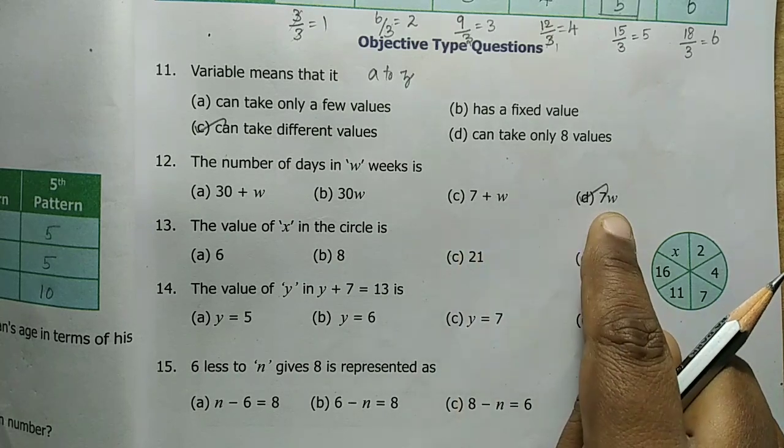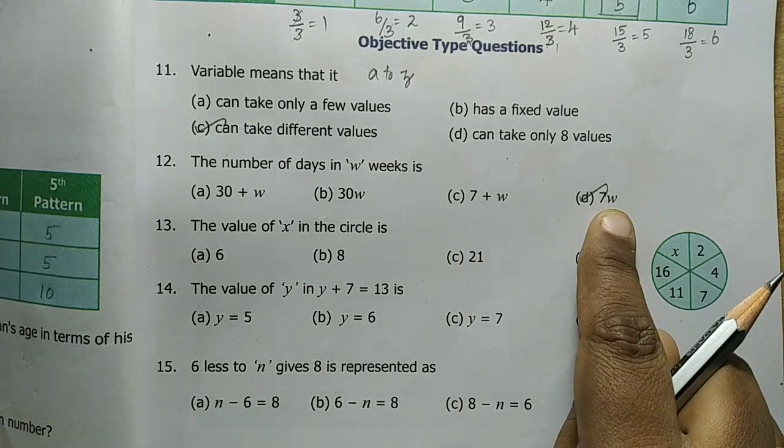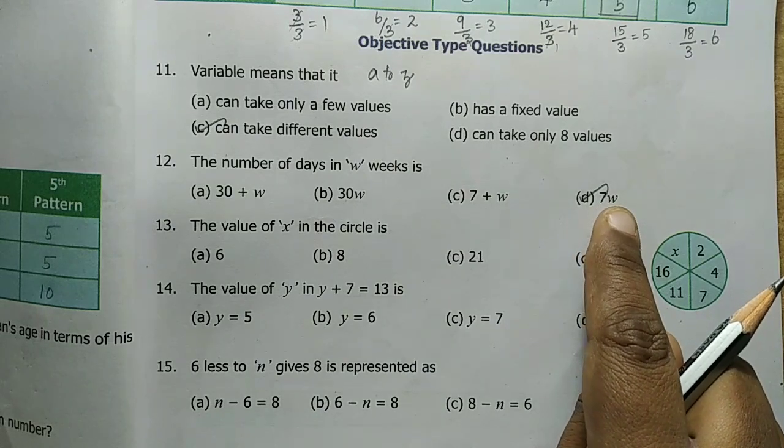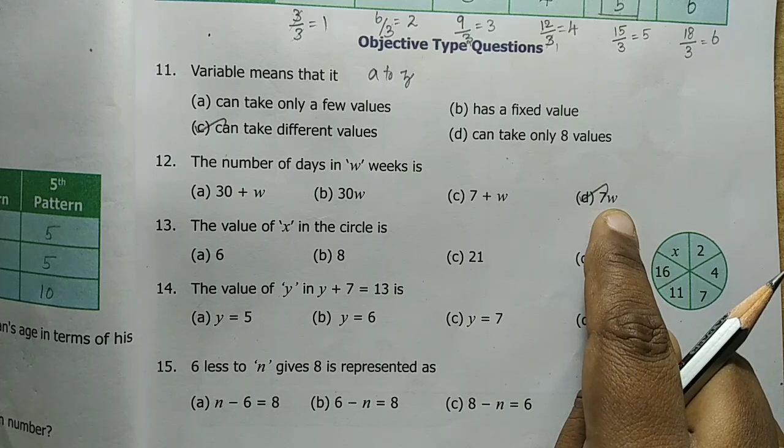So 7 into W. Week on the value, 1 week on the 1, 7. 2 week on the 7, 2's are 14. 3 week on the 7, 3's are 21. So it will be change.